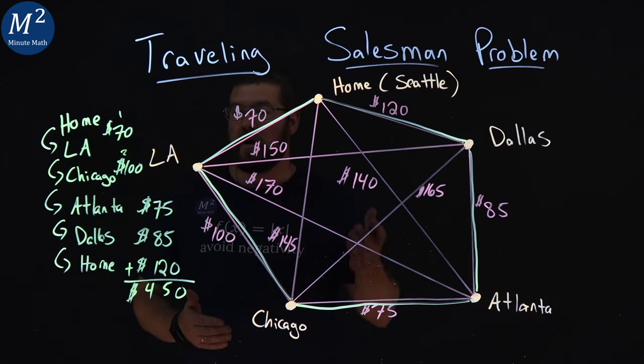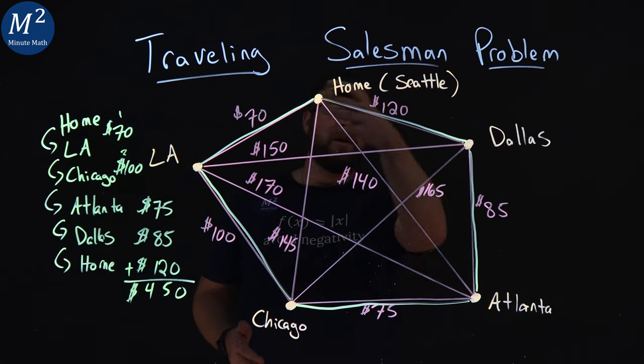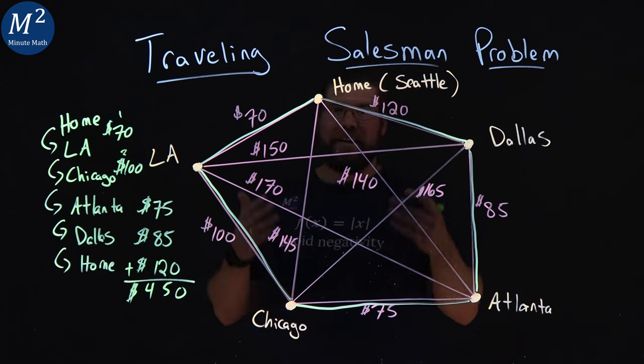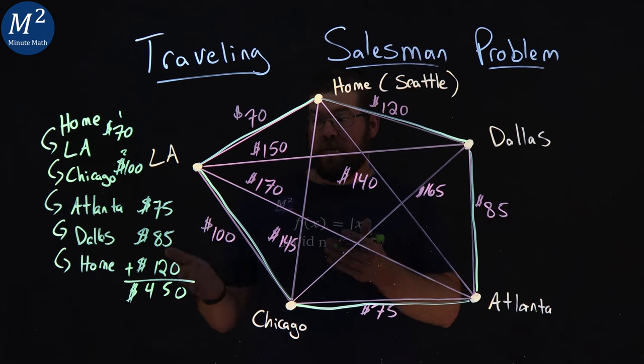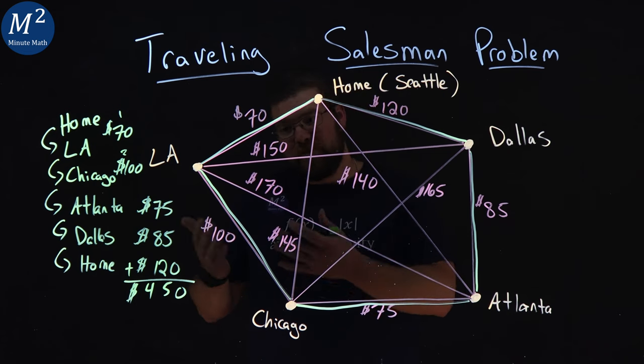And so the overall cost to travel to all of these cities is $450. And we can find other Hamiltonian circuits to do that. And if we can find a cheaper price, that's a better circuit.